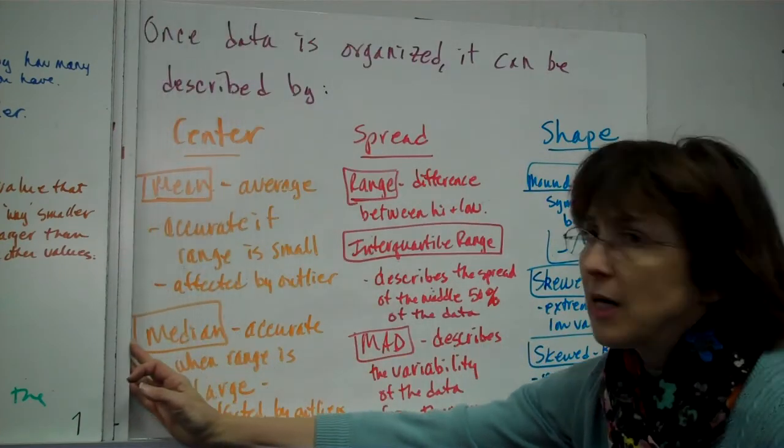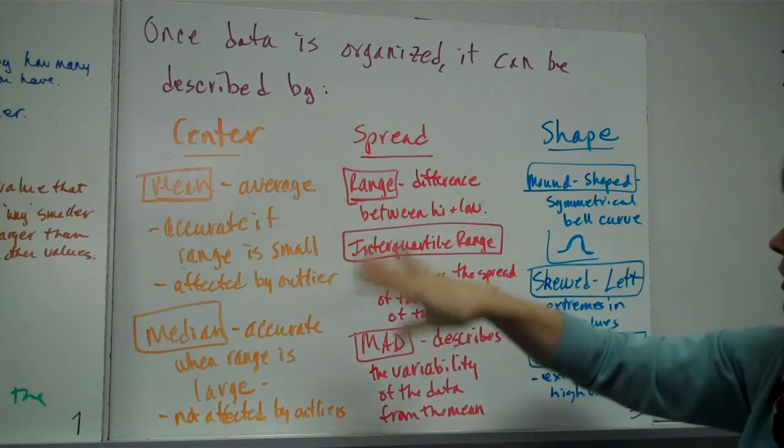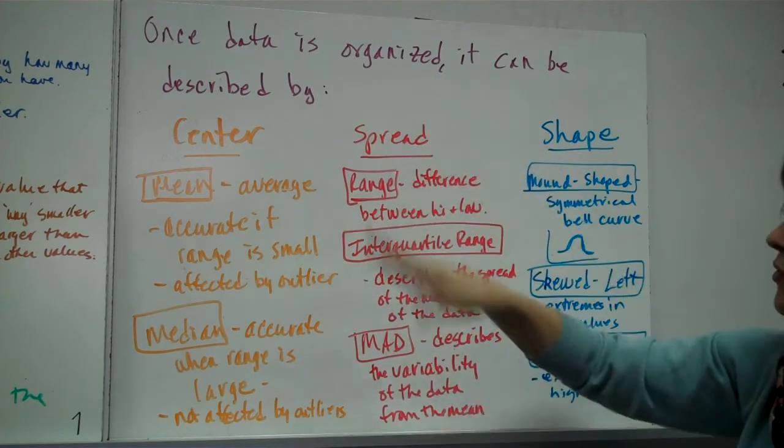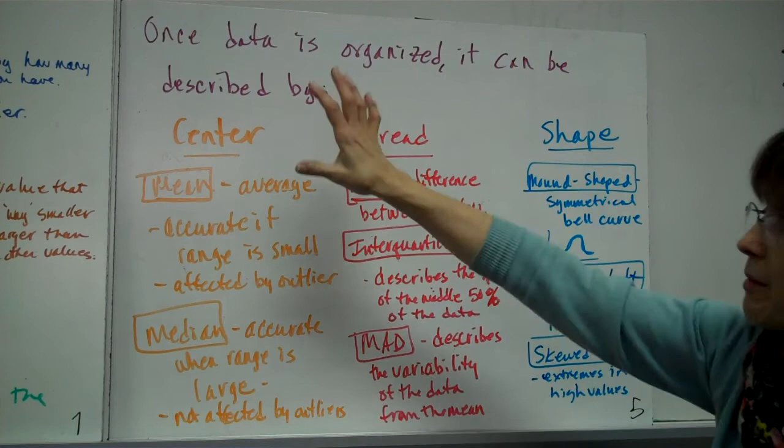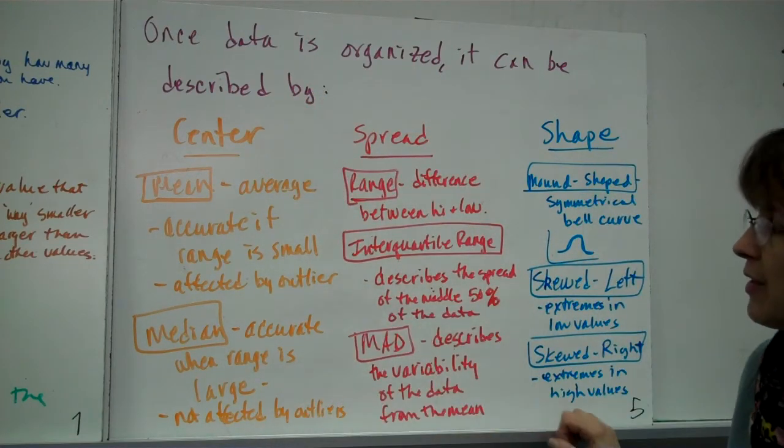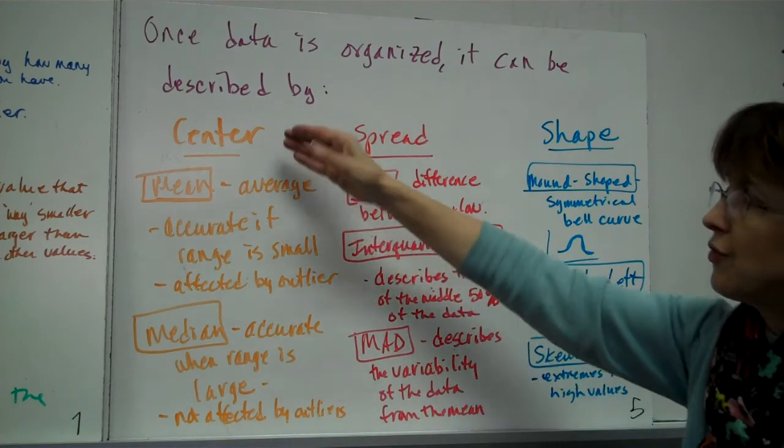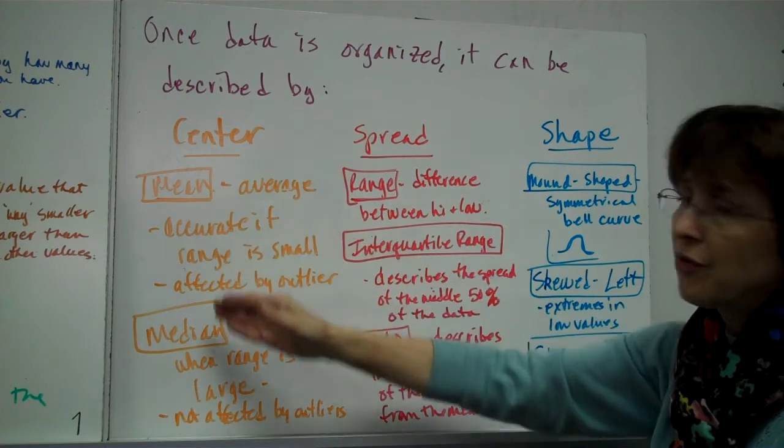Once the data is organized in all those different ways, one of them at least, it can be described by three different ways. You can either describe it by its center, by its spread, and by its shape. If you can describe these three things, and that really tells you a lot about the data. Okay, like if you, the center, the way to describe it by center, you'd use the mean or the median. And we've already talked about that a little bit.